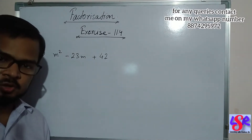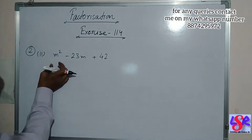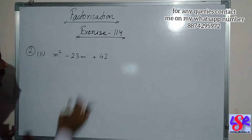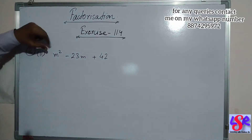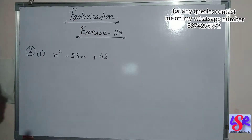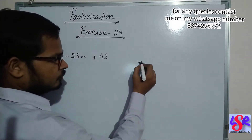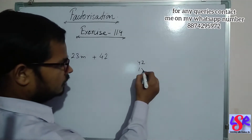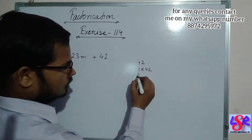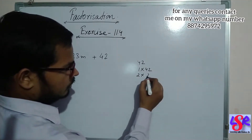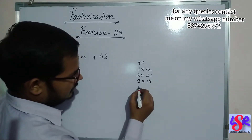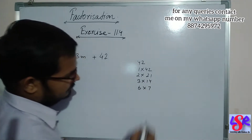Now let's go with question number two, second part. Here we are having m square minus 23m plus 42. Again we multiply the coefficient of m square with 42 and on doing so we get 42 as the product. The factors of 42 are 1 into 42, 2 into 21, 3 into 14, and 6 into 7.